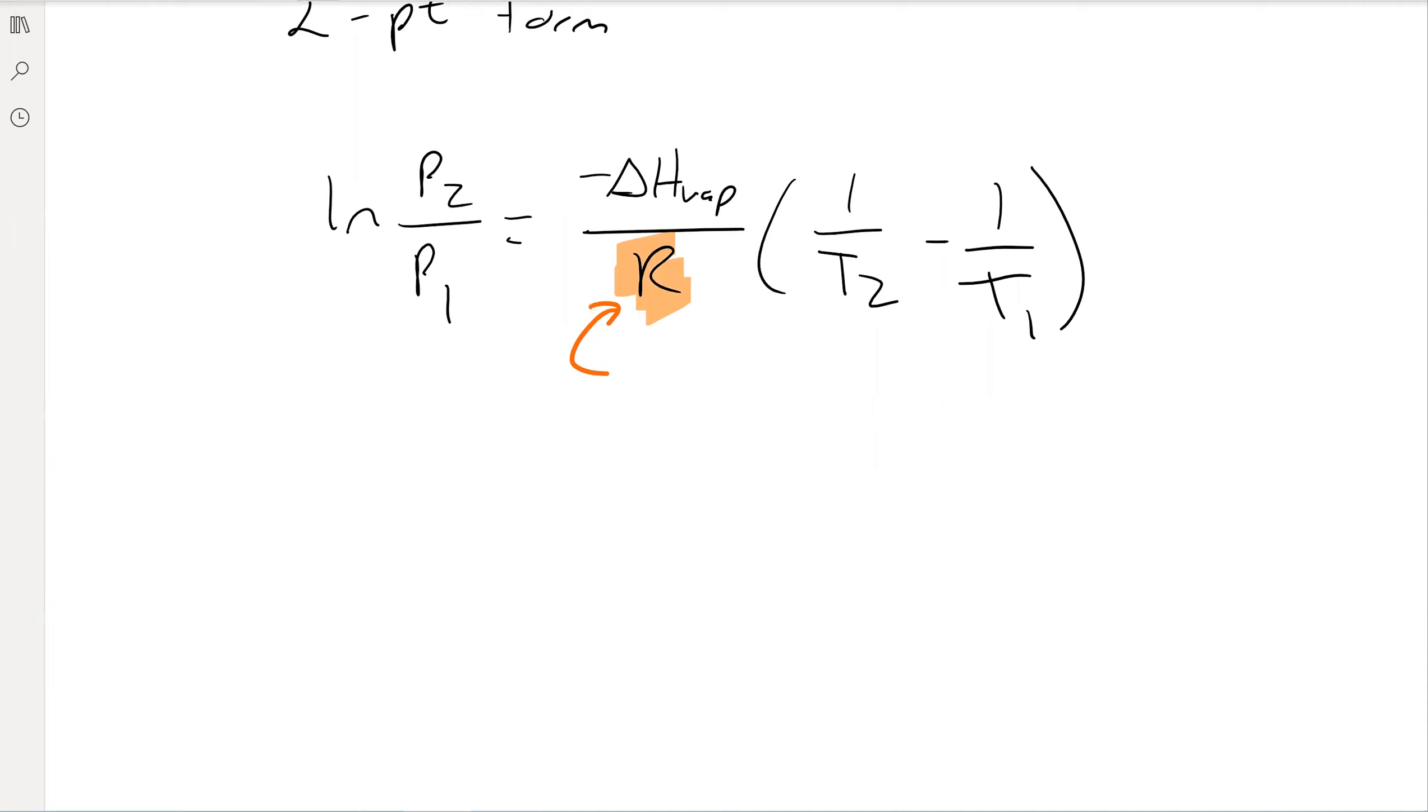This R here is the same as our gas constant, except now it has different units. Instead of having liters atmospheres per mole Kelvin, it's got joules per mole Kelvin. It's 8.314 joules per mole Kelvin. And you can indeed interconvert the different R's into one another. Take a look online about how to do so.